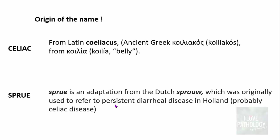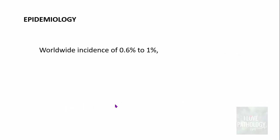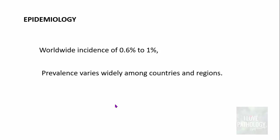That's how it was referred to as celiac sprue, but now that we know the etiology very well, it is referred to as gluten-sensitive enteropathy. The worldwide incidence of celiac disease is around 0.6 to 1%, where the prevalence varies widely among countries and regions.